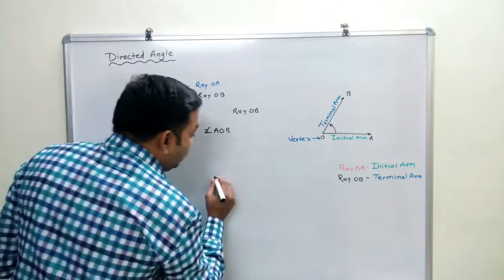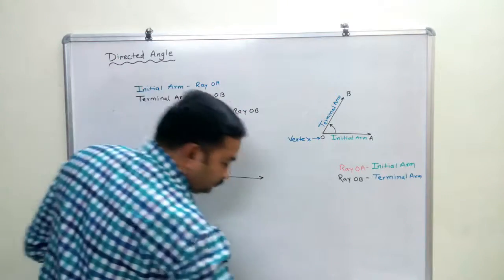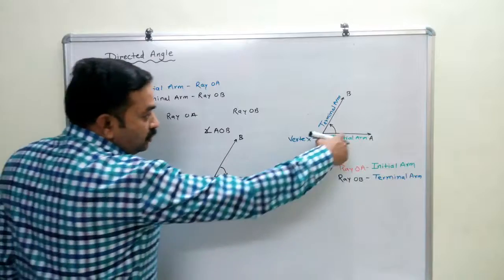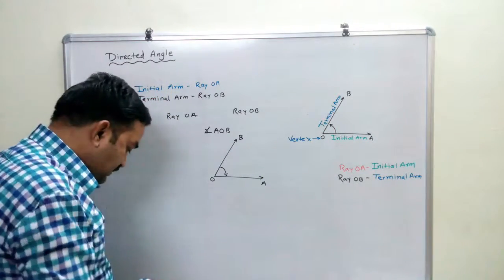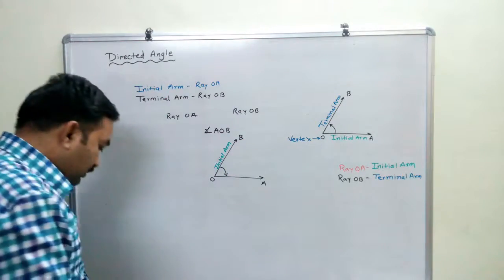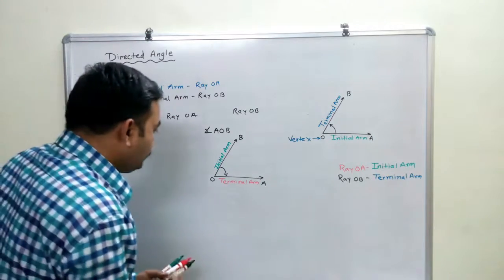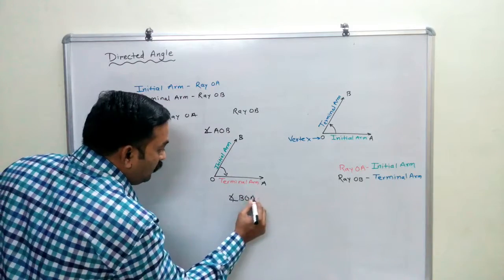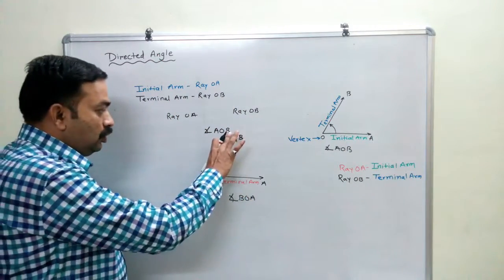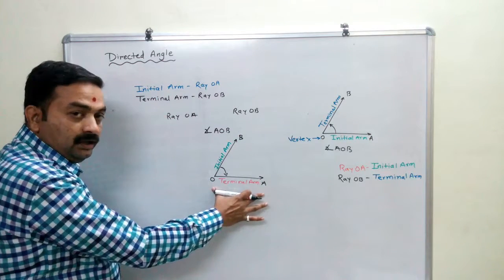Now see — here the rotation is clockwise, and here the rotation is anticlockwise. For the clockwise case, O-B is the initial arm and it starts rotating in clockwise direction and takes its position to O-A, which is the terminal arm. So the name of that angle is directed angle B-O-A. Here O is the vertex in both cases.